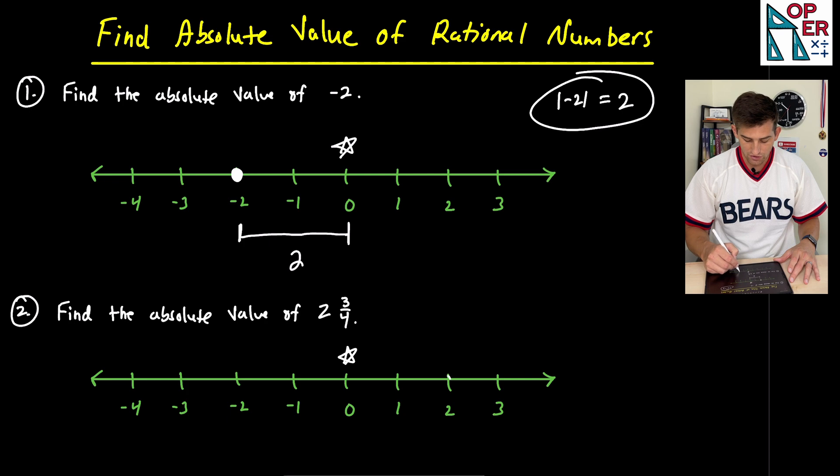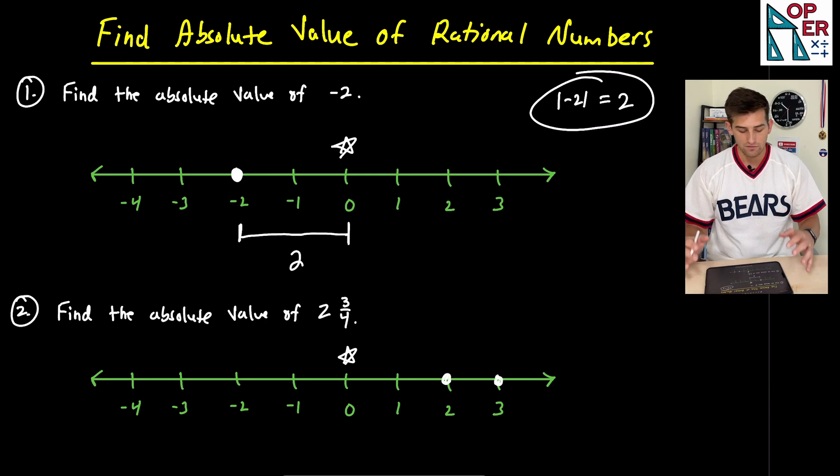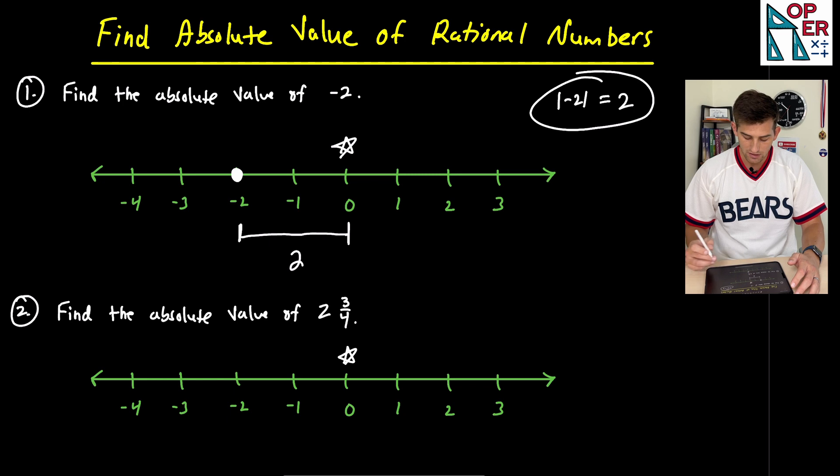And then here's two, and here's three. So we know that two and three fourths needs to be somewhere between two and three.